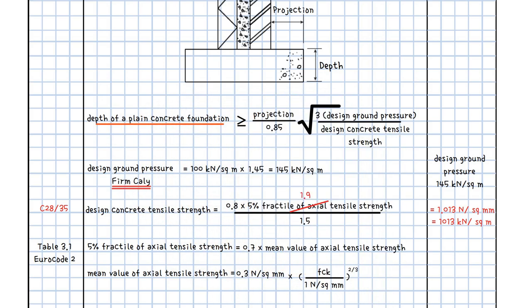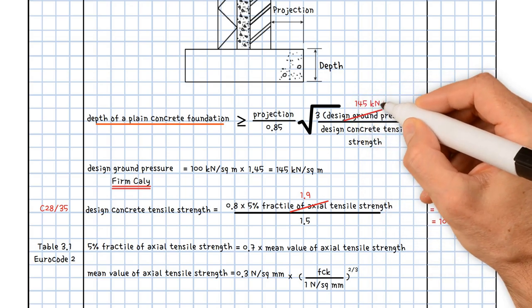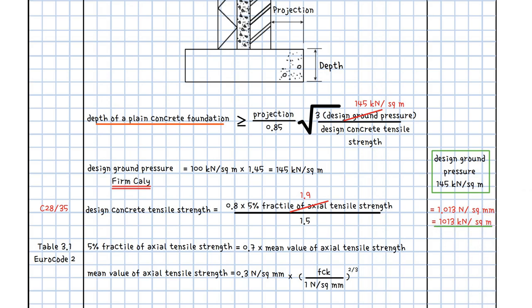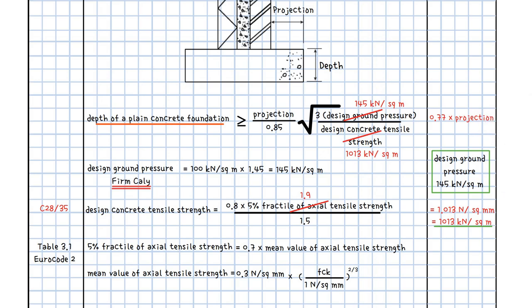Substituting into the equation, the typical depth of a plain concrete foundation is equal to or greater than the projection divided by 0.85, times the square root of three times 145 kN/m² divided by 1013 kN/m². This gives a typical depth equal to or greater than 0.77 of the projection from the wall or column. Hence, a plain mass concrete foundation should typically be at least as deep as the projection from the face of the wall or column. Eurocode 2 suggests a simplified formula: depth equals twice the projection, which covers all values but may be too conservative in many cases.